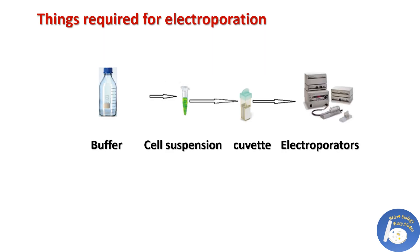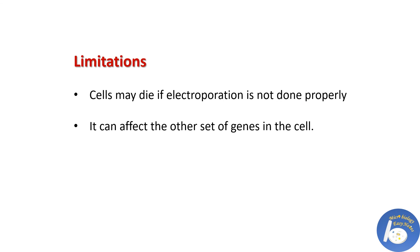Things required for electroporation are: a buffer to make a suspension of the cell, materials to be transferred, a glass or plastic cuvette used to fill the cell suspension, and an electroporator — the device in which electroporation is performed.